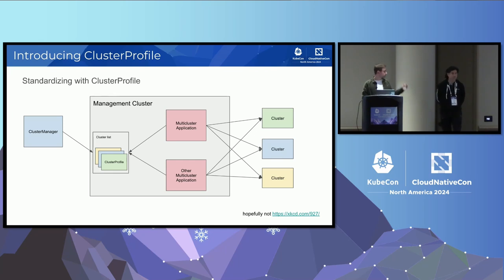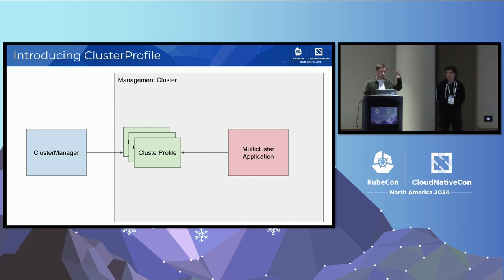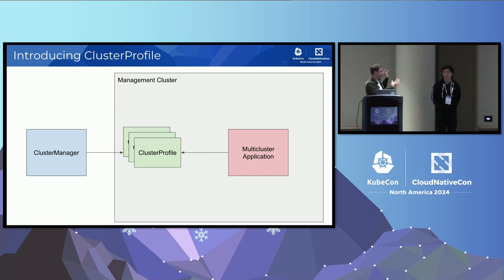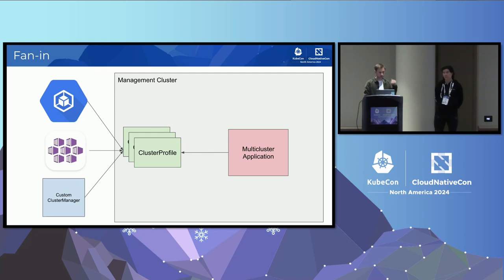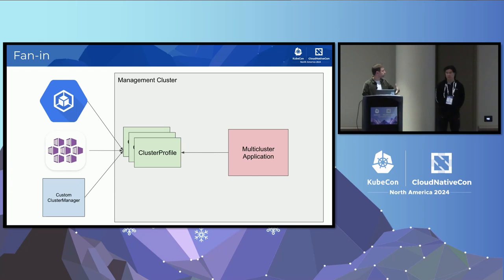Going back to our previous picture, the diagram is now simpler — there's only one list, effectively unifying them all. There's a producer on the left, a cluster manager that produces a ClusterProfile, and on the right consumers of it: the multi-cluster applications. We're working on GKE and Azure, so we'll have support for ClusterProfile, translating our existing fleets into ClusterProfile so they can be supported by open source applications. If you have your own custom cluster manager, you can write the ClusterProfile too.